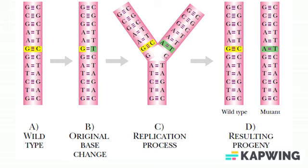When mutations are induced by experimental treatment, it is necessary to allow the cells time to divide after treatment before imposing any selection. This allows the original DNA strands to separate and the cell to make new DNA molecules that are either fully wild-type or fully mutant.